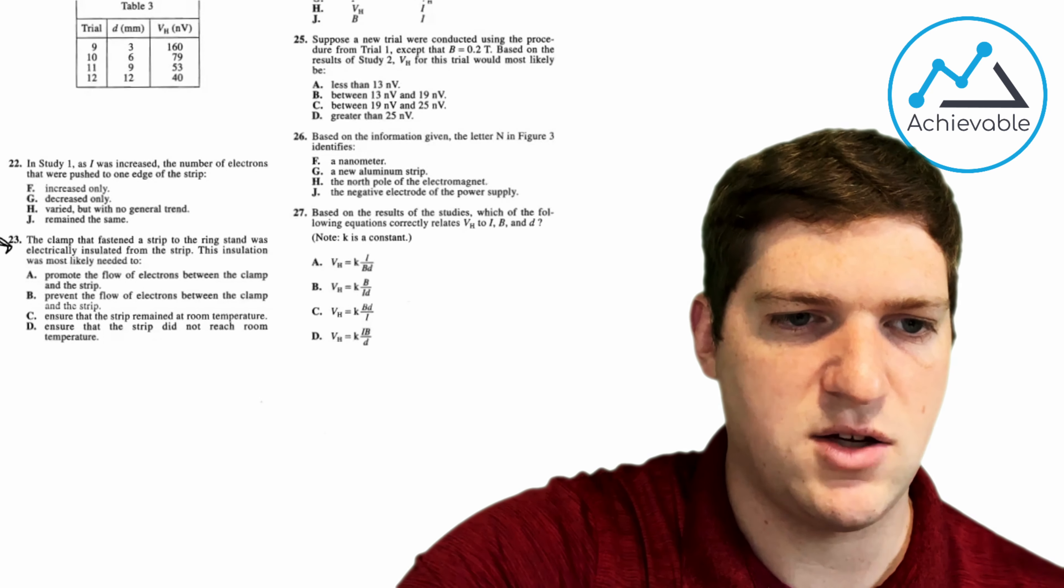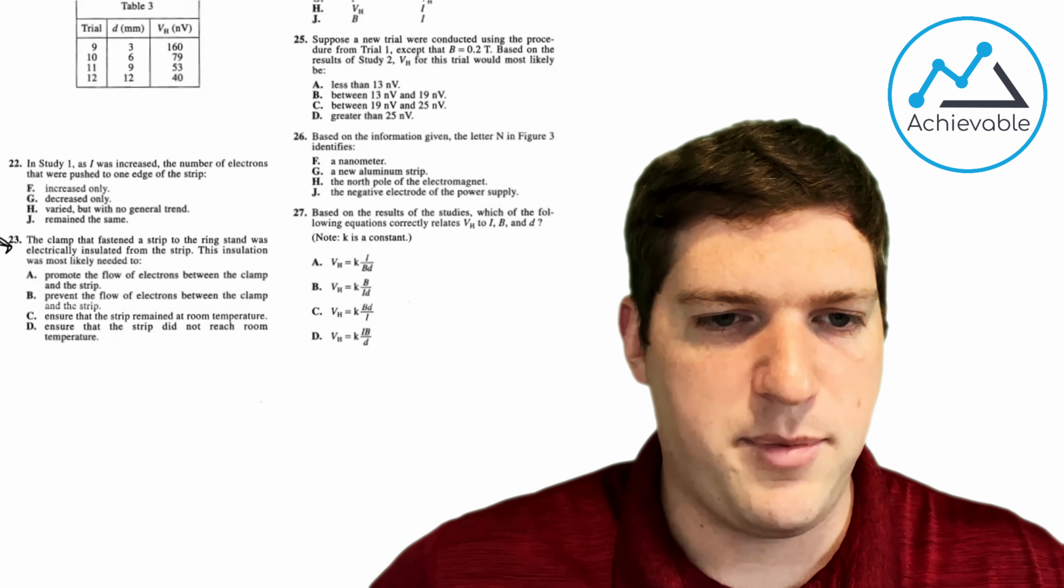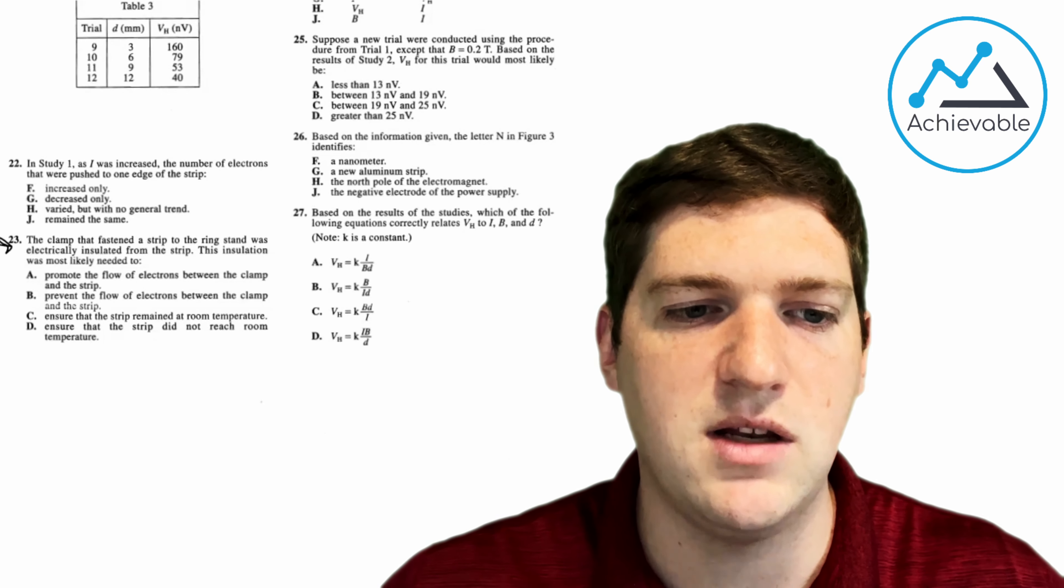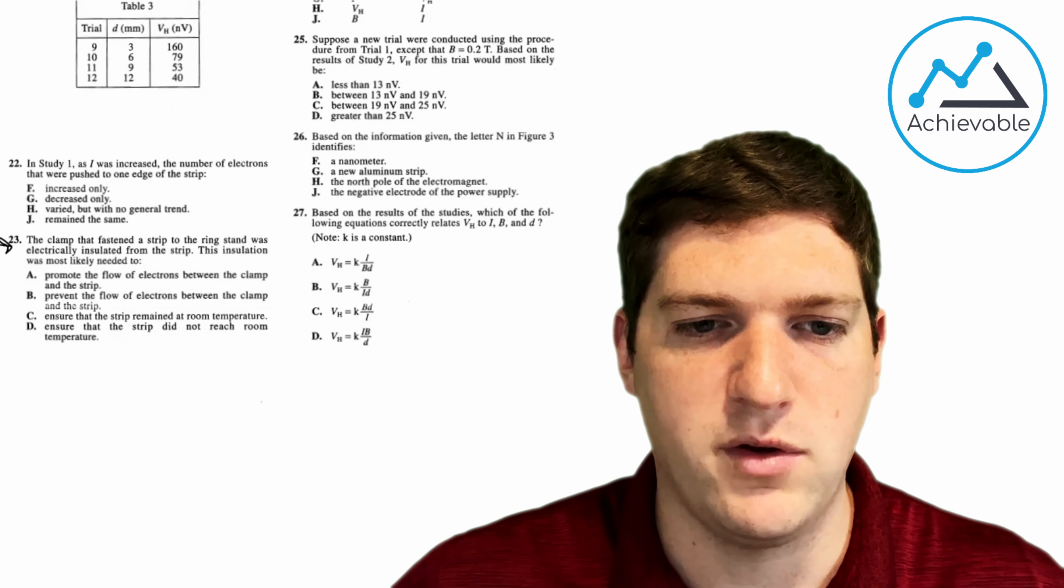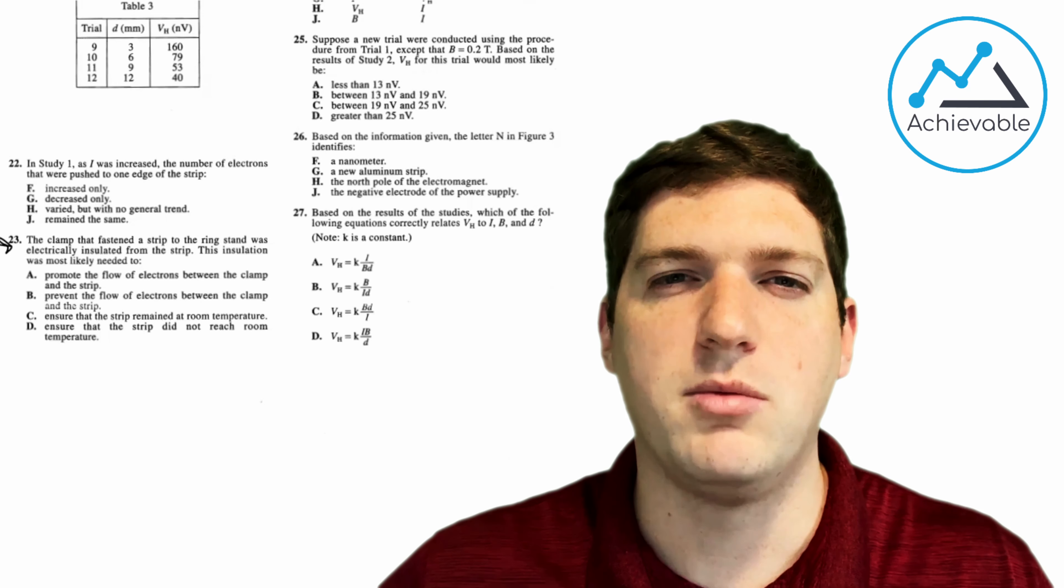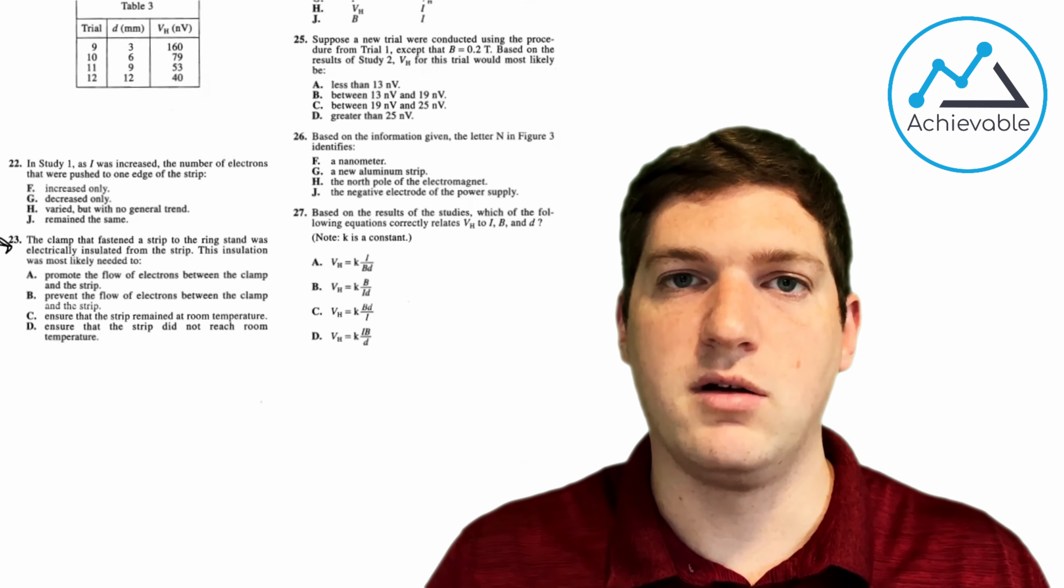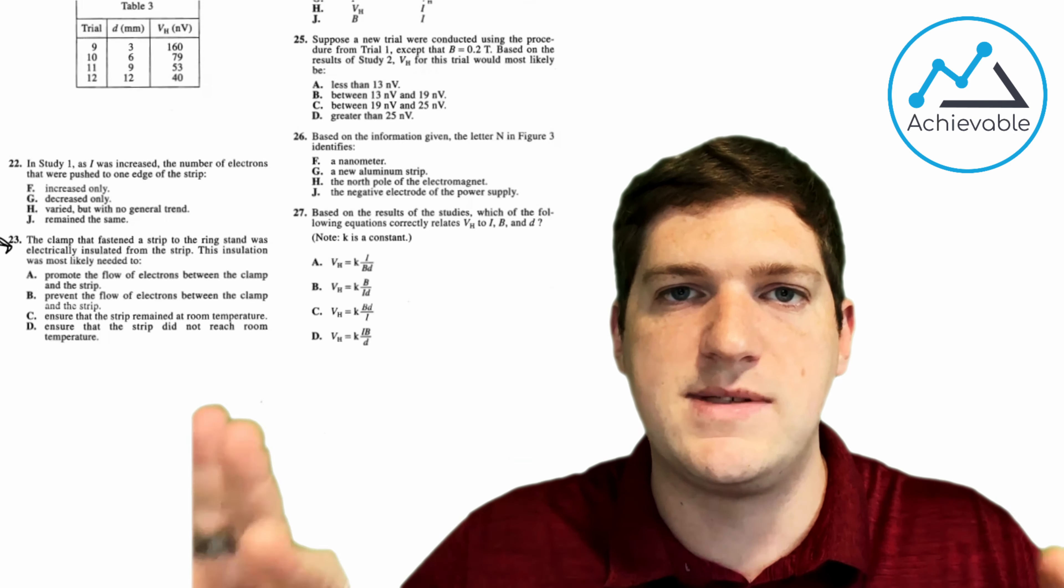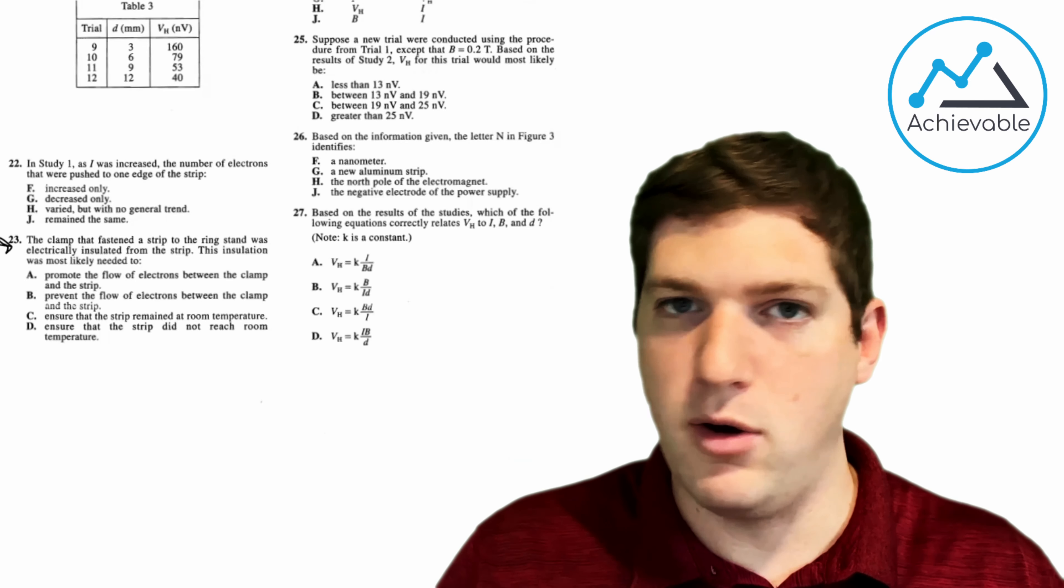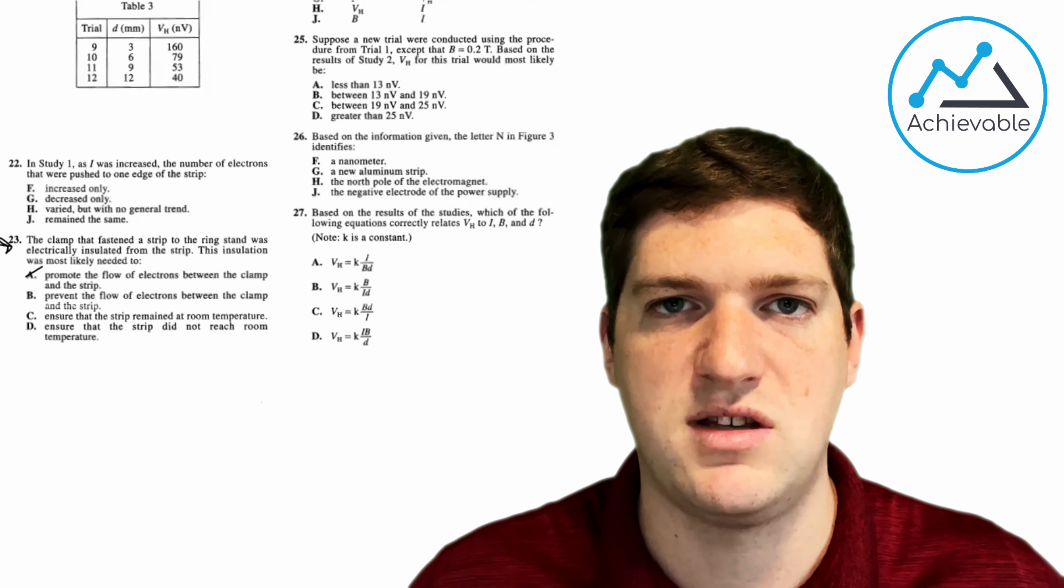23 is a good example of questions that ask you to understand what is going on and why they chose to do certain things. The clamp that fastened a strip to the ring stand was electrically insulated from the strip. This insulation was most likely needed to, and then we've got some answer choices here, promote the flow of electrons between the clamp and the strip. This is a little bit of one of those questions where you have to know a little bit before. If you know what an insulator is, this becomes a little easier. An insulator keeps things from moving. So think about the insulation in your house. It keeps the heat in, keeps the cold out, or vice versa. So insulators aren't going to promote the flow of anything. So we can pretty much remove A. Prevent the flow of electrons between the clamp and the strip. That seems likely. Let's just double check the answers.